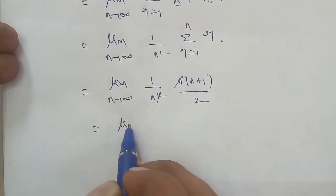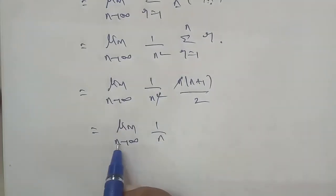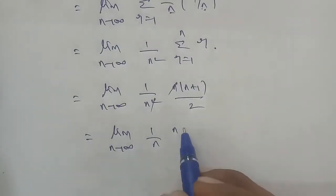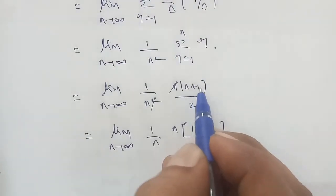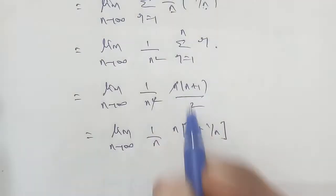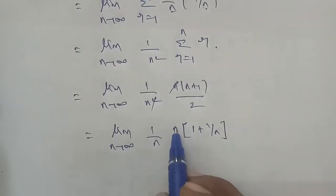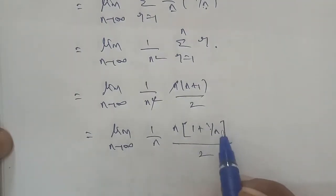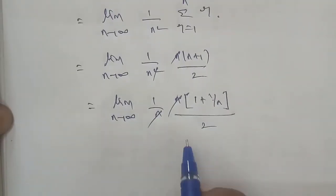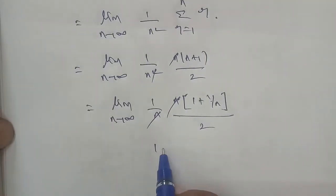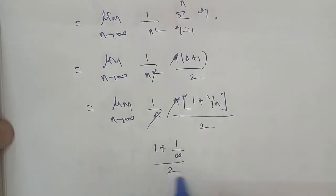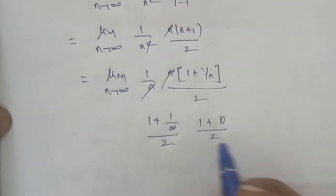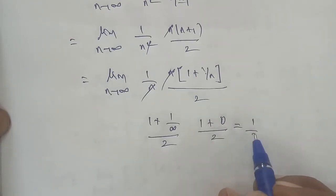Next, limit n to infinity, 1 by n squared. Applying the sum formula, 1 plus 2 plus 3 up to n equals n times n plus 1 by 2. So this becomes limit n to infinity of 1 by 2 times 1 plus 1 by n. Applying n to infinity, 1 by n equals 0, so the total value is 1 by 2. Answer: 1 by 2.